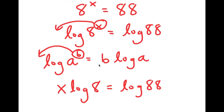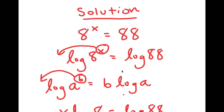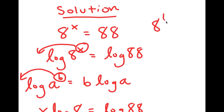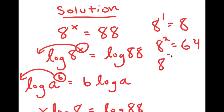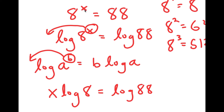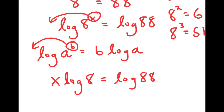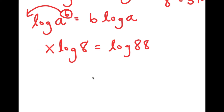The reason this property is so useful is because before, x was an exponent. For our equation, if x is 1, I get 8; if x is 2, I get 64; and if x is 3, I get 64 times 8, which is 512. We want to find what value of x results in 88, which is somewhere between 2 and 3, but it's going to be a decimal — we can't find the exact value while x is in exponent form. This is why we use this property to make it a real term, making it much simpler to solve.